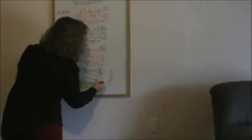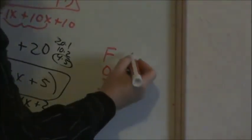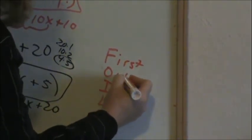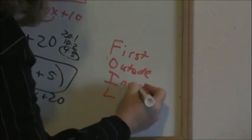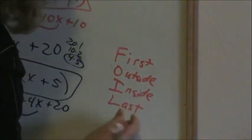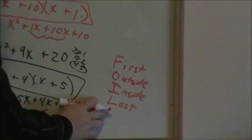Just in case you forgot, the FOIL method — when you're checking to make sure that your factors are correct — the FOIL method stands for First, Outside, Inside, Last. And again, if you can't remember FOIL, you can go back to watch the video on multiplying binomials.